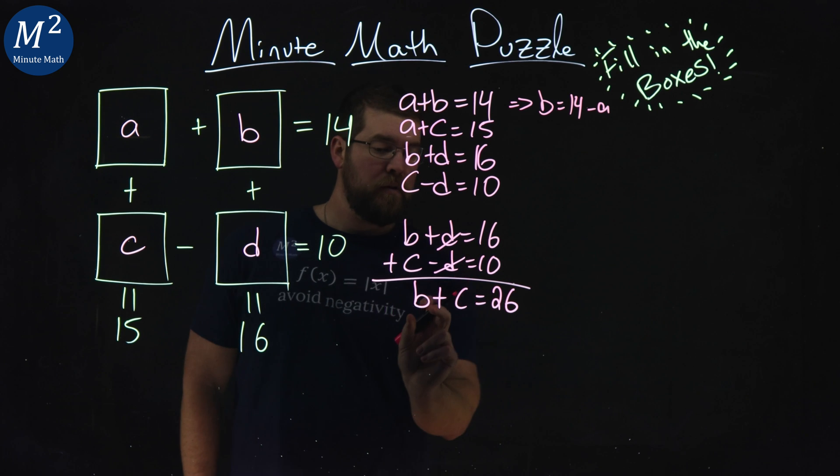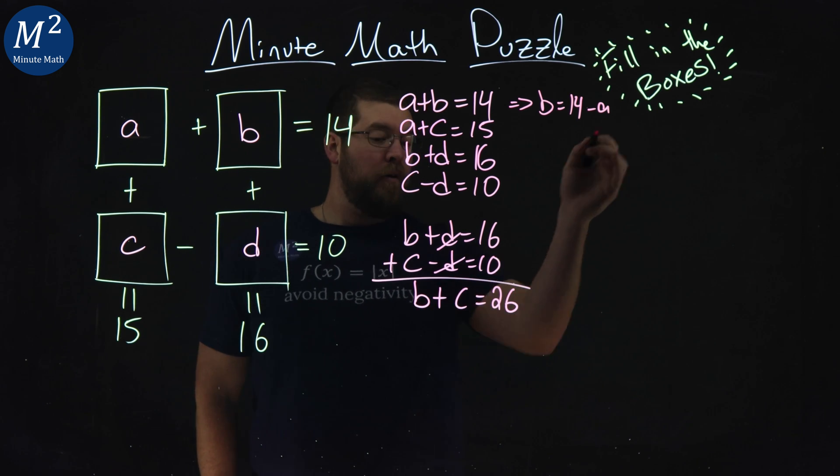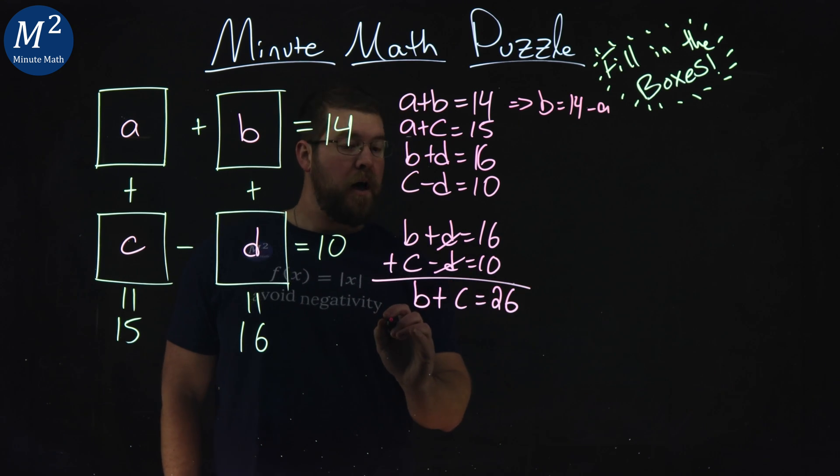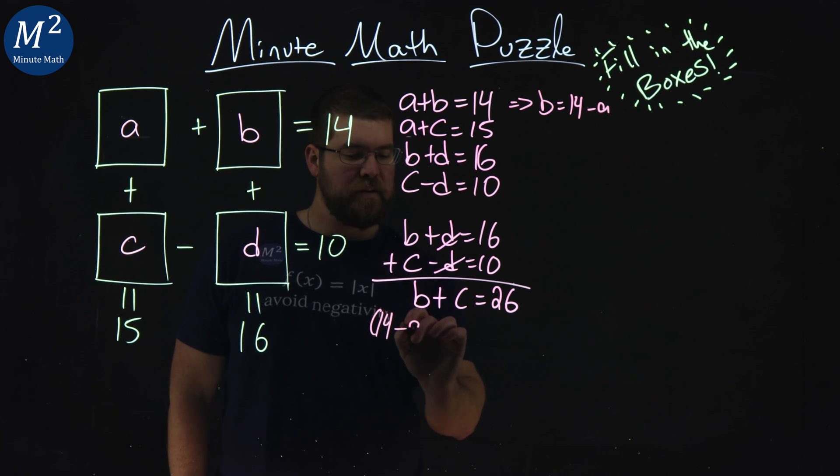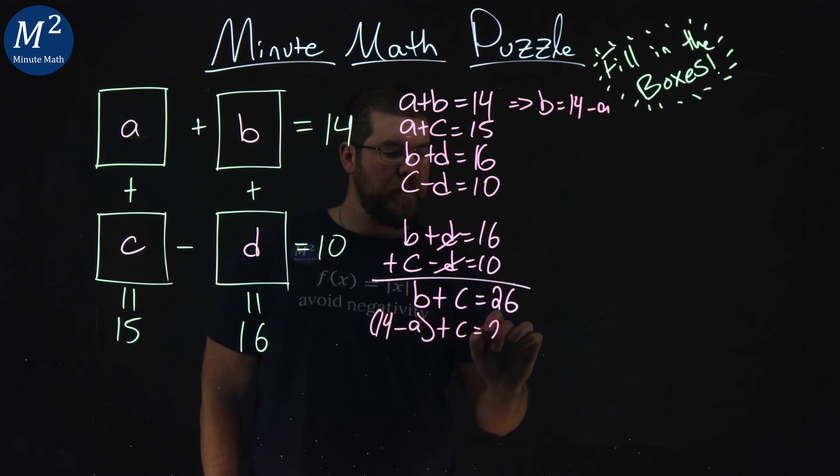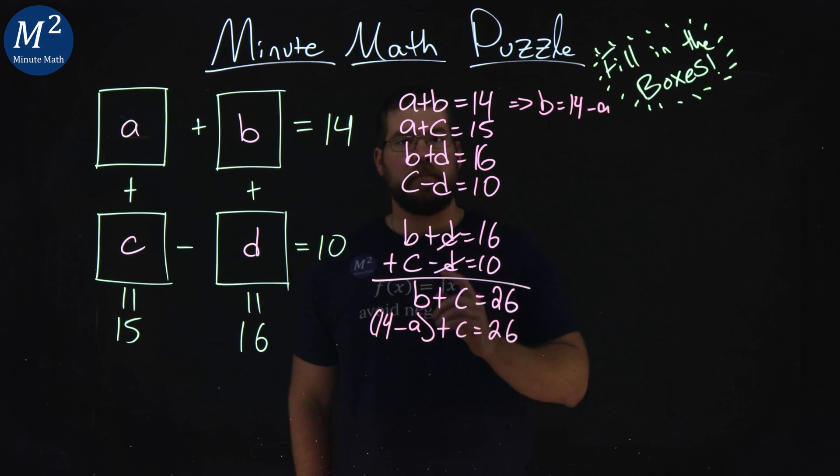With that information, I can substitute that in for B. So B here is 14 minus A plus C equals 26, okay?